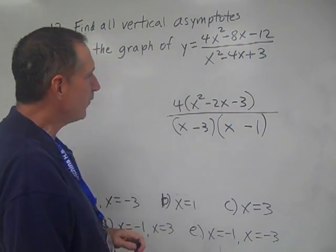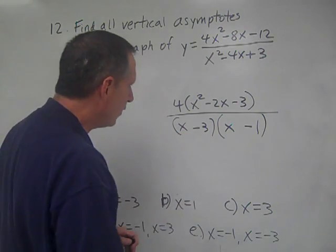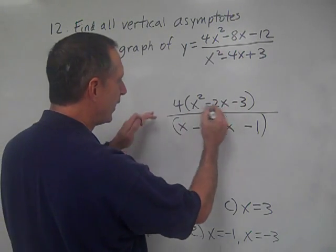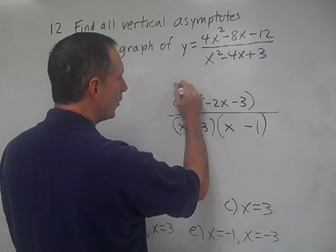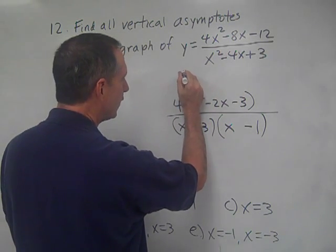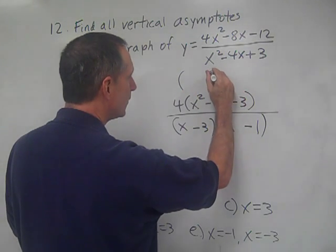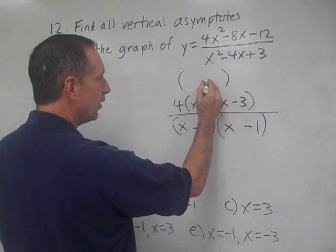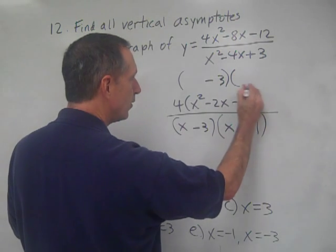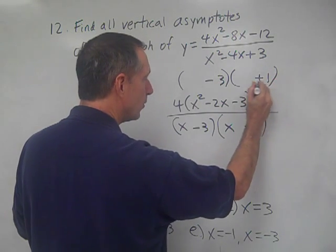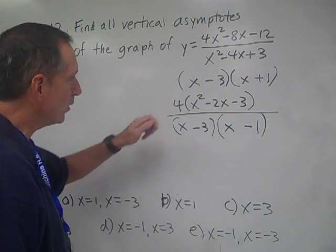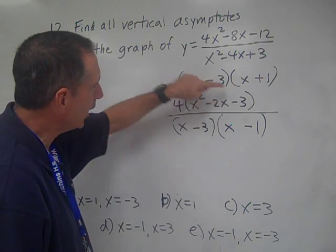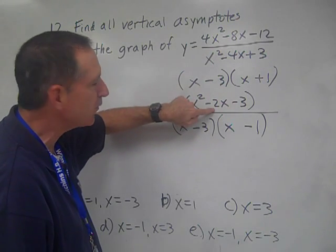And so we have something that we can factor again. What's going to be the factoring of x²? It's going to be again 3 and 1, but it's going to be minus 3 and plus 1. So (x - 3) and (x + 1), and it's going to be minus 3x plus x, so minus 2x.